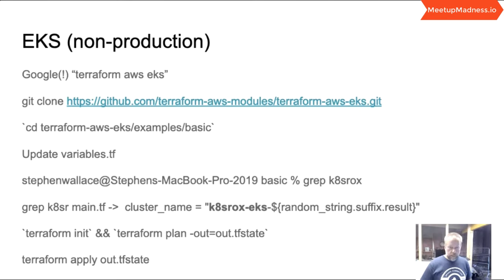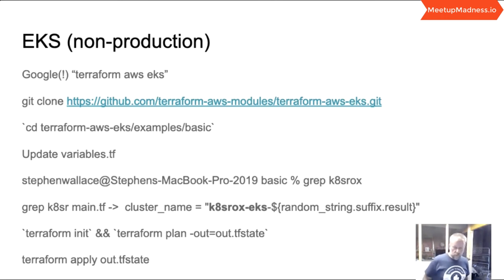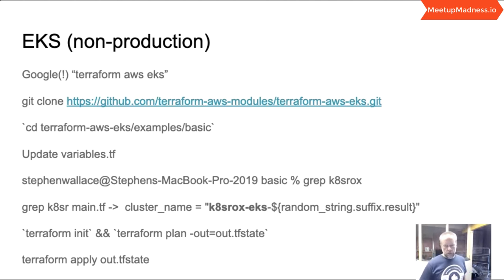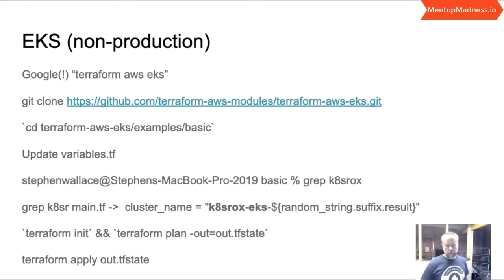To summarise: I updated variables.tf, pre-pended the name of my cluster so it makes a bit more sense, and then did a terraform init. You need to download and install Terraform from the HashiCorp website first. Terraform init will pull down the modules that are required for the terraform-aws-eks code to work — there are a couple of modules including the AWS one. That init might take 30-45 seconds, but only once. Then we do a terraform plan, outputting that plan into a file that we can then apply.